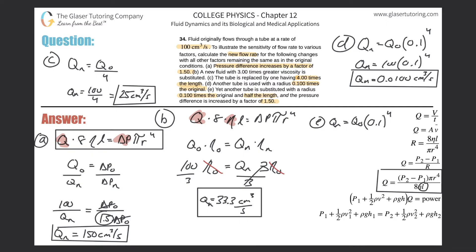Notice where the length is — it's in the denominator. So if the length is halved, that means Q should go up by that same factor. If the length is halved, Q should essentially double.